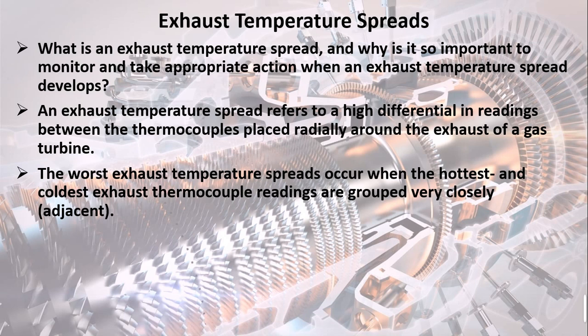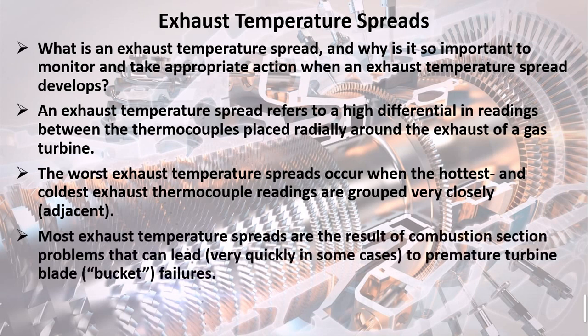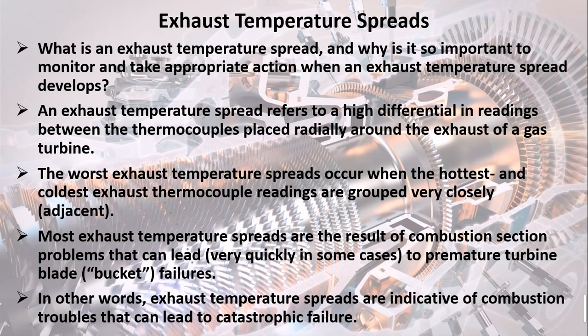The worst exhaust temperature spreads occur when the hottest and coldest exhaust thermocouple readings are grouped very closely adjacent. Most exhaust temperature spreads are the result of combustion section problems that can lead, very quickly in some cases, to premature turbine blade and bucket failures. In other words, exhaust temperature spreads are indicative of combustion troubles that can lead to catastrophic failure.